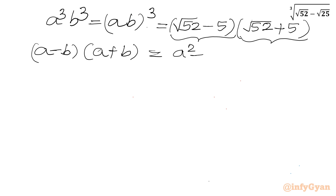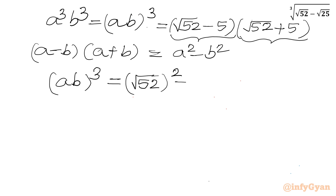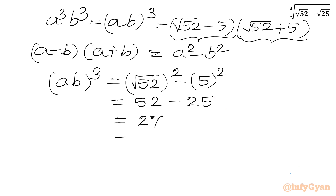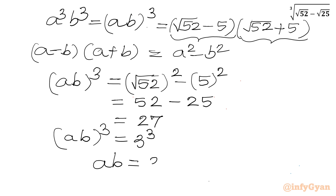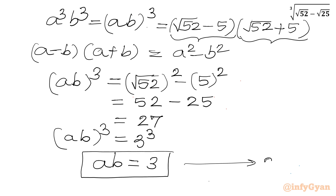We know that a minus b times a plus b equals a squared minus b squared. So I can write (ab) whole cubed equal to root 52 whole squared minus 5 whole squared. Root 52 squared is 52, and 5 squared is 25. So 52 minus 25 is 27, which equals 3 cubed. Now taking cube root of both sides, ab equals 3.